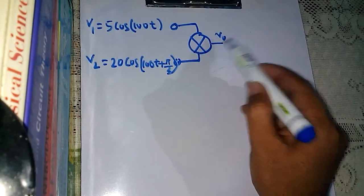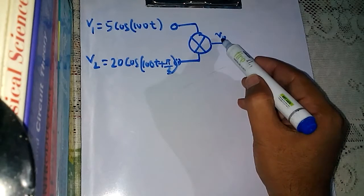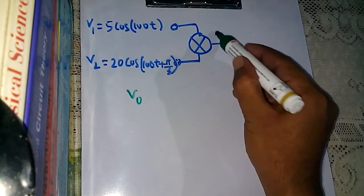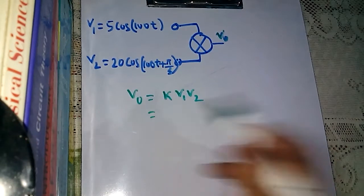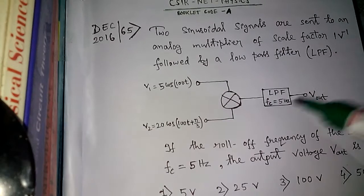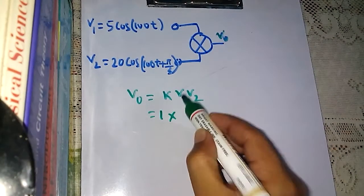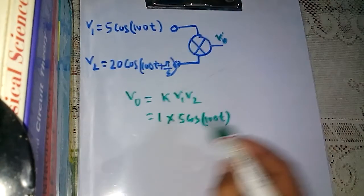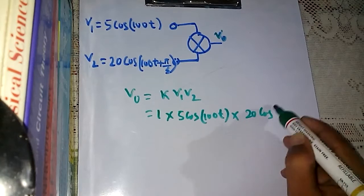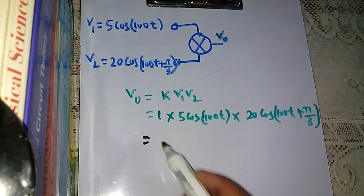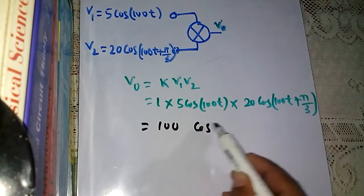The standard output formula for the multiplier having two inputs is: output = K × V1 × V2. K is the scale factor, which is 1 per volt, so K = 1 in this problem. Therefore the output is 1 × 5·cos(100t) × 20·cos(100t + π/3). So we have to multiply these two. 5 times 20 is 100, giving us 100 × cos(100t) × cos(100t + π/3).